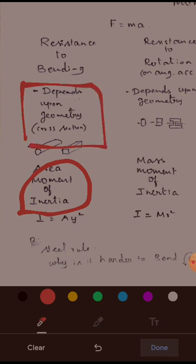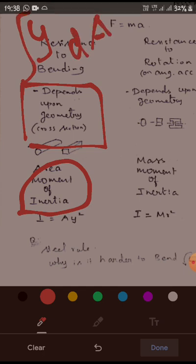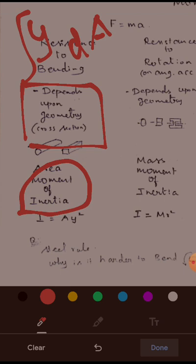It depends upon the geometry. For every cross section it will vary — a rectangular cross section will have one kind of resistance, and a circular cross section will have another magnitude of resistance. It is possible to measure this resistance. We have already introduced a quantity called the first moment of area, which is the integration of y dA. To measure the moment of inertia or resistance to bending, we need the second moment of area: the integration of y² dA, which we call the area moment of inertia.